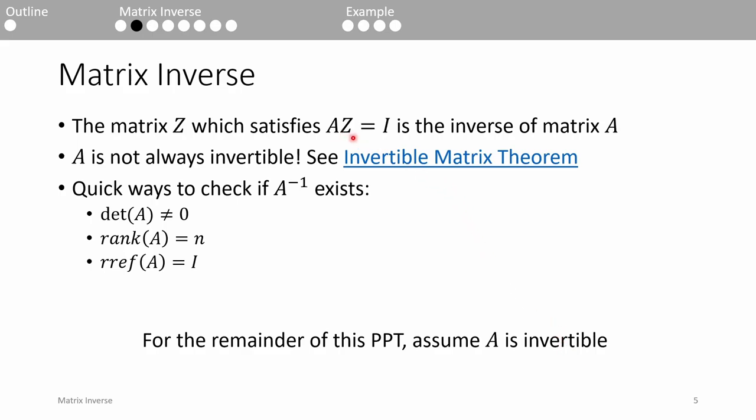A is not always invertible even if A is square. The invertible matrix theorem contains a whole list of conditions you can check to determine if A is invertible or not, but the three I like to use and are probably the fastest to check are listed here. To make things easier on ourselves, let's just assume that any A matrix in the rest of this presentation is invertible.